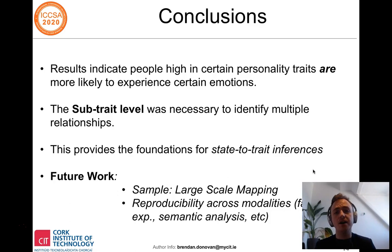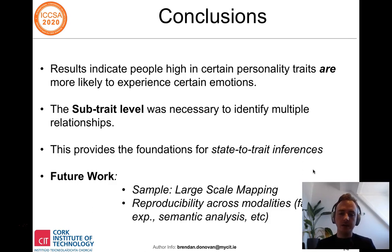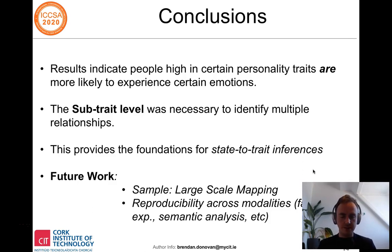In terms of overall conclusions, results did indicate that people higher in certain personality traits are more likely to experience certain emotions. The sub-trait level was necessary to identify multiple relationships, and in cases where both a five-factor trait and its sub-trait predicted a basic emotion, the sub-trait often predicted it with a higher effect size. In terms of future work, we would like to increase the sample size and scale the experiment to test robustness, and also test reproducibility of these relationships through multiple modalities — facial expression analysis, semantic analysis, and affective computing. We believe this research provides a foundation for state-to-trait inferences that can be harnessed by affective computing and psychology researchers.